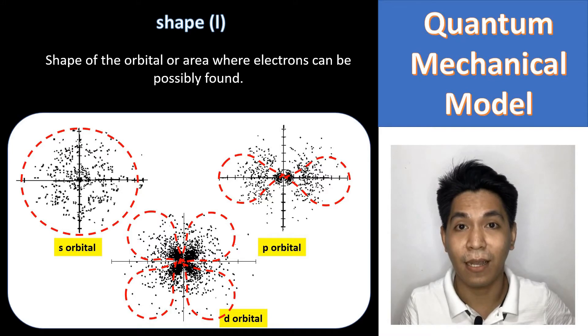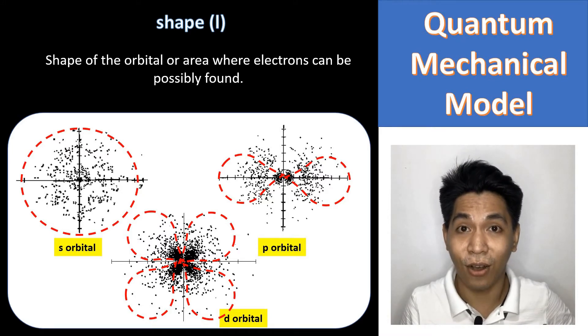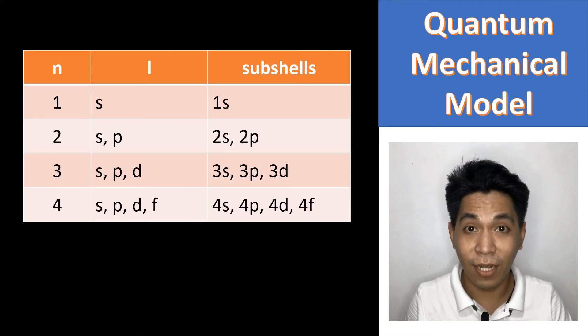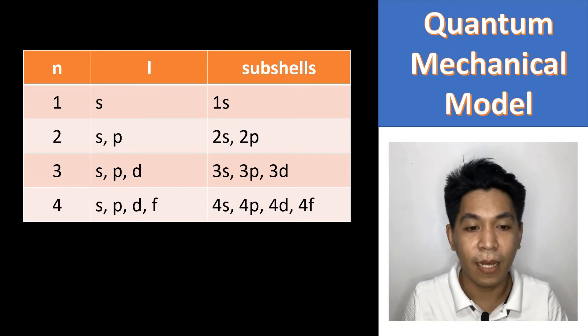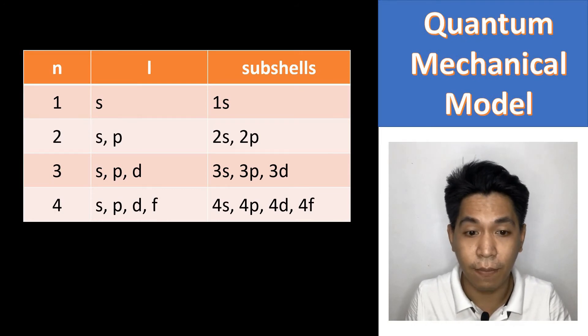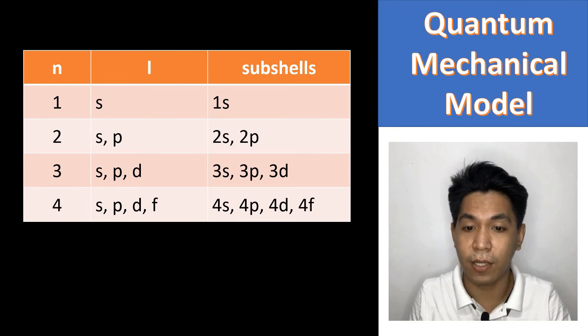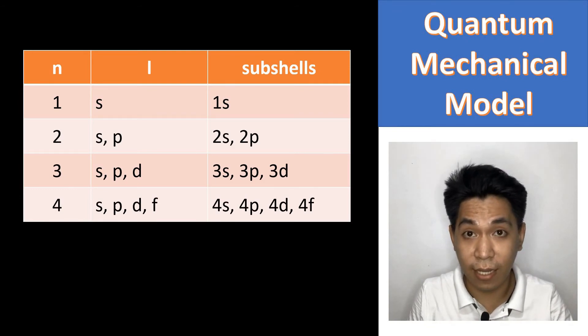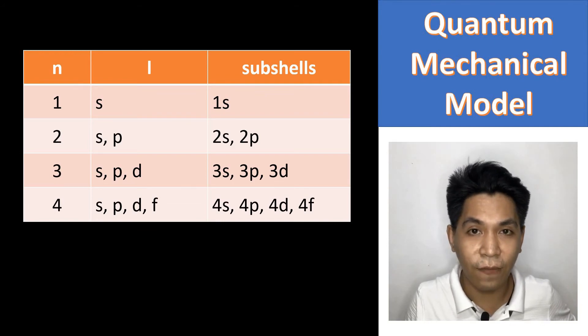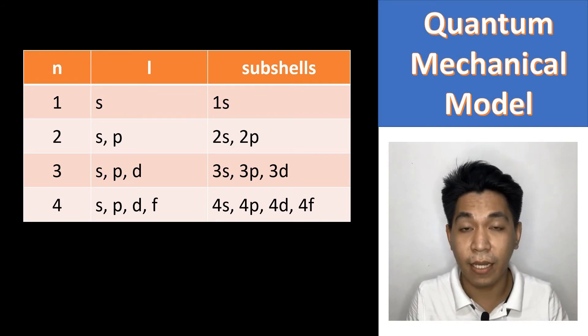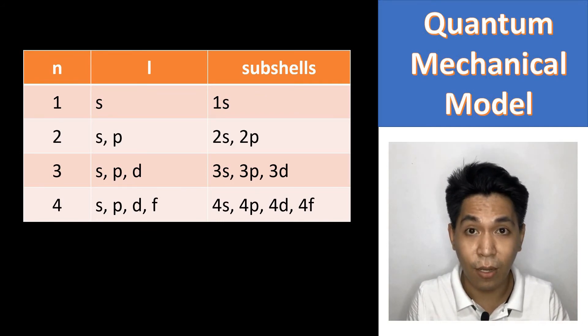An atom can have more than one orbital shapes. It depends on the size of the atom, or the value of the n. Now, take a look at this table. This table summarizes the possible shapes of orbitals in terms of the size of the orbital. For example, if the value of n is 1, then there can only be one orbital shape, and that is the S orbital.